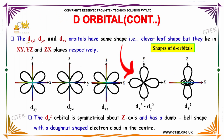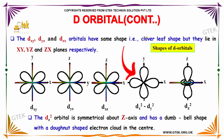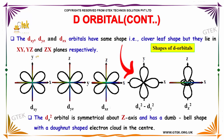The dxy, dyz, and dzx orbitals will have the same shape — the clover-leaf shape. But they lie in the xy, yz, and zx planes respectively.